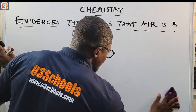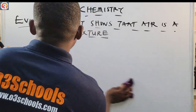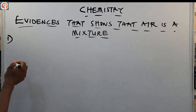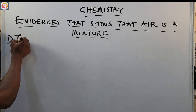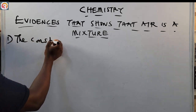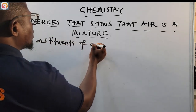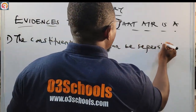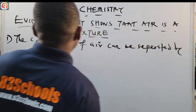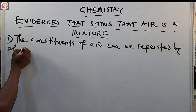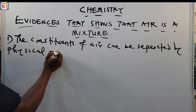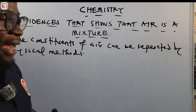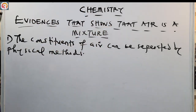Now let us see the evidences that support that air is a mixture. The first evidence is that the constituents of air can be separated by physical methods.